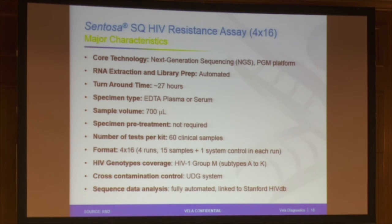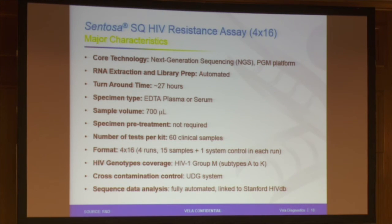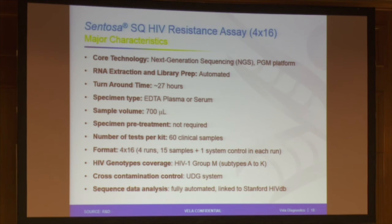Here is a summary of the HIV assay features: NGS core technology, automated turnaround time, serum and plasma accepted, specimen treatment not required, 60 clinical samples per test kit as the commercial packaging. HIV coverage is HIV-1 group M — we are not looking at group O or HIV-2. The UDG system is included, and the full automation already mentioned.